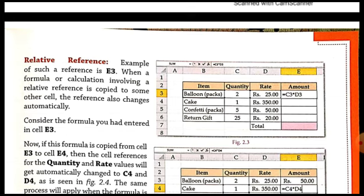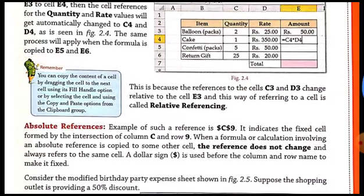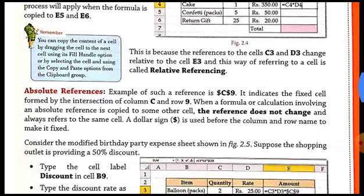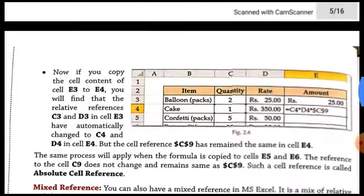In the case of absolute reference, the cell references will remain fixed if we copy the formula from one cell to another. We can copy the formula as many times as we wish, but we will not be able to change the cell references if they have been defined as absolute reference. Absolute references are fixed and they do not change when the formula is copied from one cell to another.